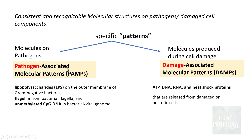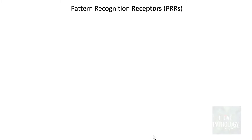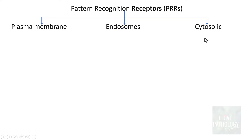These two types of patterns — PAMPs and DAMPs — are recognized by receptors called pattern recognition receptors, which are an important component of innate immunity. Pattern recognition receptors are classified by location: on the plasma membrane, on endosomes, or in the cytoplasm. Plasma membrane receptors identify external microbes; endosomal receptors identify ingested microbes; cytosolic receptors recognize cytoplasmic contents.